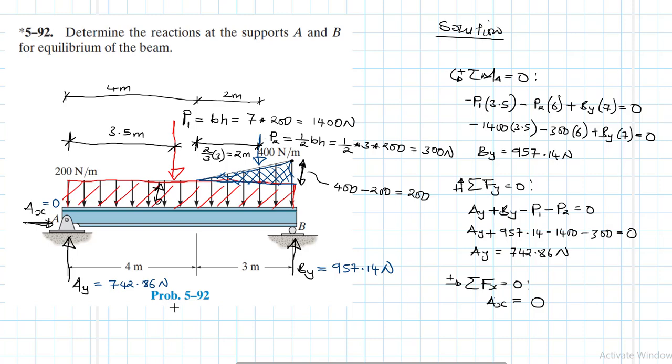So we are done. We have BY equal to 957.14 newtons, AY equal to 742.86 newtons, and AX equal to zero. So we found the support reactions at A and B for the beam to be in equilibrium. I hope the video has helped. If it was, give me a thumbs up and bye bye and see you in my next screencast.